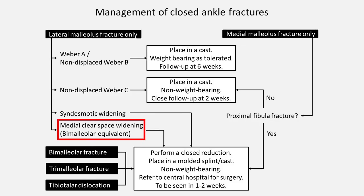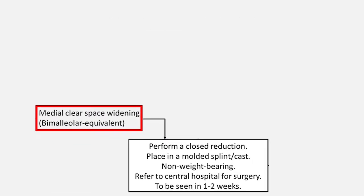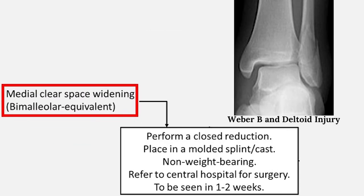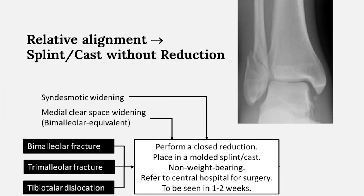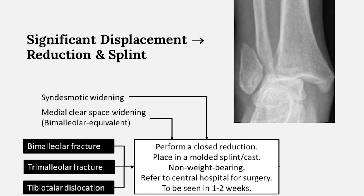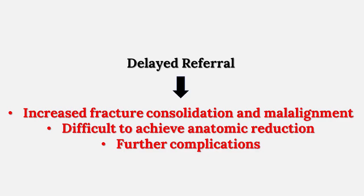With ankle fractures that demonstrate a fracture of the fibula and widening of the medial clear space, the bimalleolar equivalent ankle fracture requires closed reduction and placement in a molded splint or cast. These patients should be made non-weight bearing and referred to a central hospital for possible surgery quickly. If the fracture is relatively well aligned, a splint or cast can be applied without reduction. If there is significant displacement, the fracture must be reduced and immobilized with a splint. Delayed referral can result in increased fracture consolidation and malalignment, making surgery more difficult.